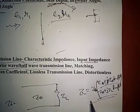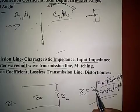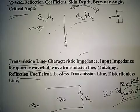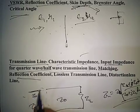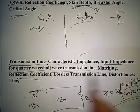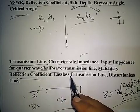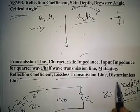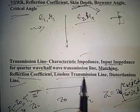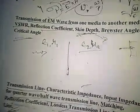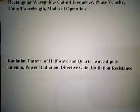The input impedance formula and related concepts can be asked in the exam. Matching of transmission lines — when Zin equals the characteristic impedance Z0 of the next connected line — is also asked. Reflection coefficient is given by (ZL minus Z0) divided by (ZL plus Z0). Lossless and distortionless transmission lines differ in their alpha and beta values, and both types can be examined.